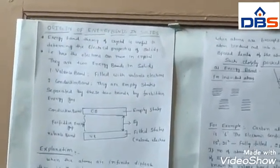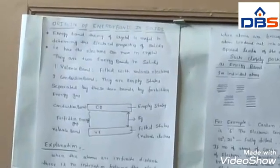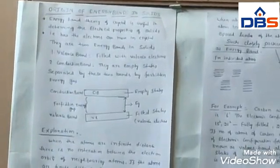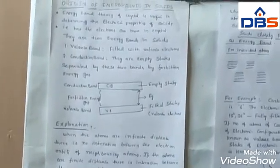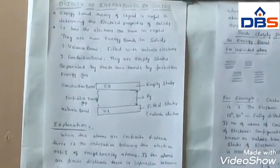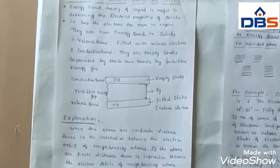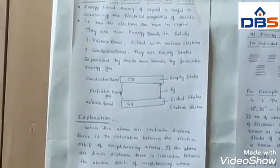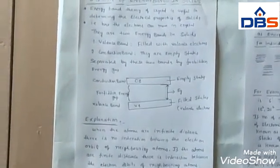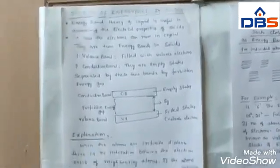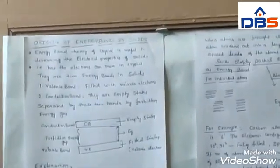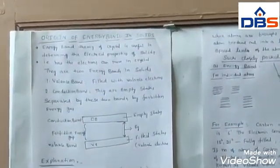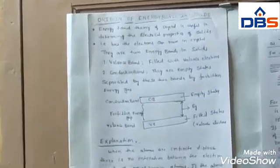What is the origin of energy bands in solids? The energy band theory of crystal is useful to determine the electrical property of a solid. The electrical property of a solid is nothing but the conduction of electrons. Based on the conduction of electrons, we have defined the conductivity of those solids. There are three types of solids: conductor, semiconductor, and insulators.